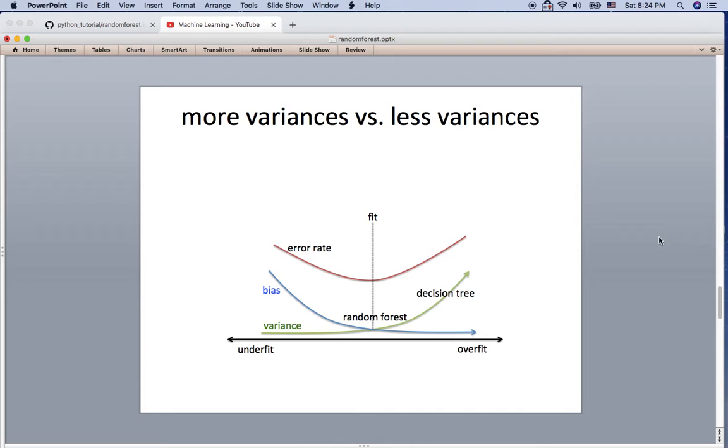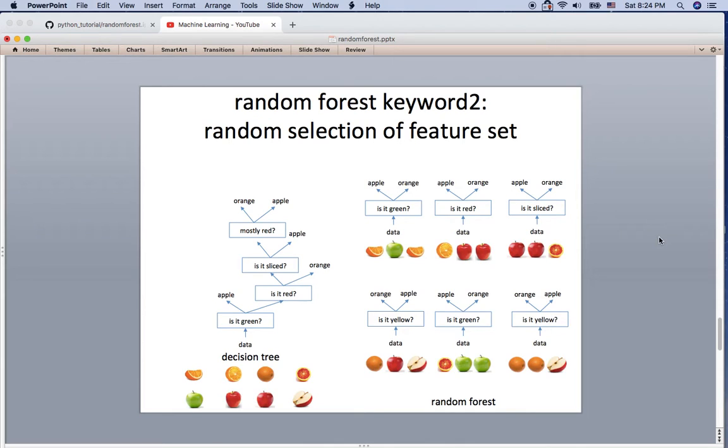The second keyword of the random forest is random selection of the feature set. In the decision tree, we always choose the best feature. For example, in this eight data, in order to split one class, what is the best question? 'Is it green?' is the best question because there's only one apple that has green while there's no orange that has the green color. So this is the best question when you split the data in the decision tree.